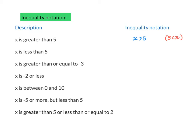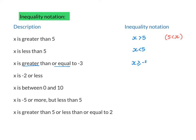X is less than 5 — I write x less than 5. Next, x is greater than or equal to: the symbol you use is the greater than symbol with the equals sign underneath. So x is greater than or equal to negative 3. Going back to x is greater than 5 — this means x can be any number bigger than 5, but not including 5. Whereas x is greater than or equal to negative 3 means x can be negative 3 or any number greater. Next, x is negative 2 or less, so that will be x is less than or equal to negative 2.